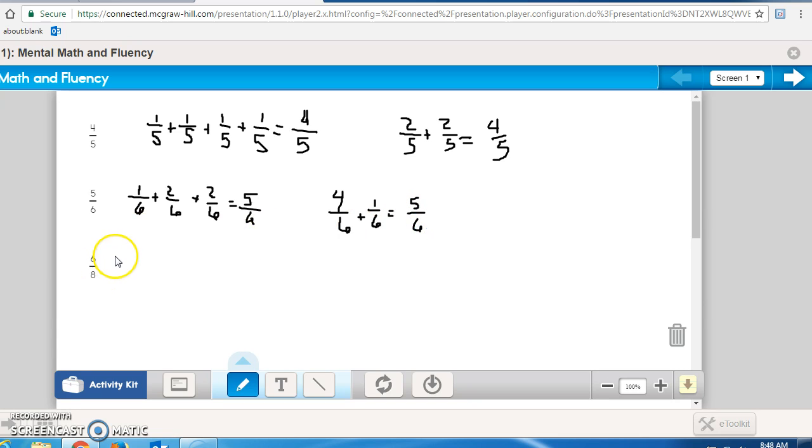And again, six-eighths. Maybe this time I want to do three-eighths plus three-eighths, which will give me six-eighths. Or I will do one-eighth plus five-eighths. Remember, decomposing numbers is just breaking them down to show how you can get the end result.